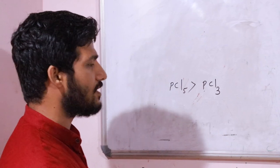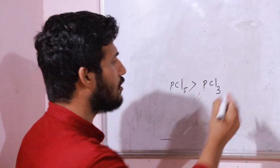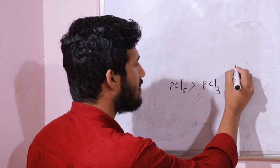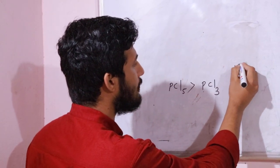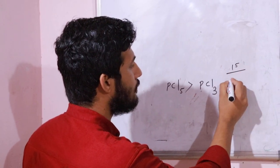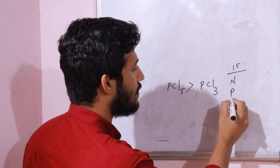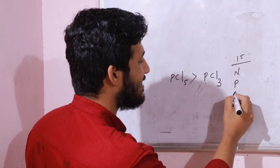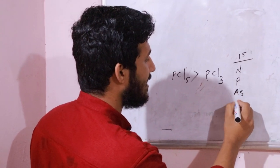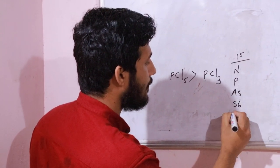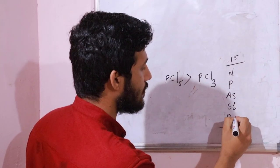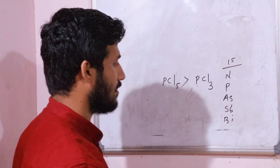We know that phosphorous is among the 15th group elements. The 15th group elements are nitrogen, phosphorus, arsenic, antimony, and bismuth.